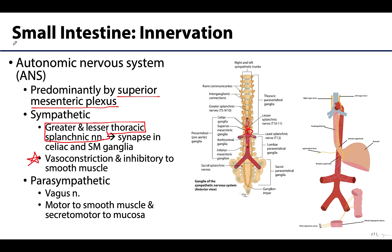For the small intestine, which is mostly midgut, the parasympathetic source is the vagus nerve — cranial nerve 10. Parasympathetics are important in resting and digesting, playing a role in initiating contraction of the smooth muscle of the gut tube and serving as secretomotor to the mucosa.